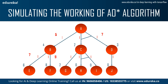Now we compare again: A to B is now 8, versus A to C and D which is 7. Since 7 is less, the algorithm starts exploring the path from A to C and D.